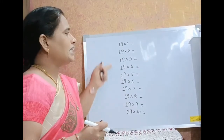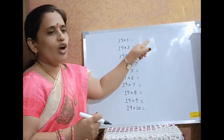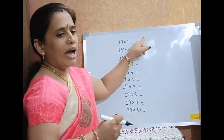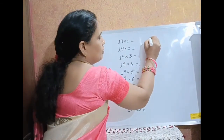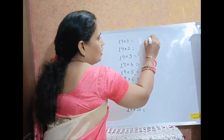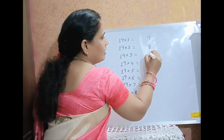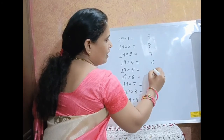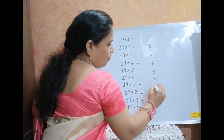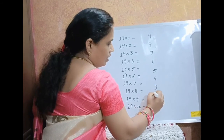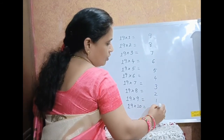For the table of 19, for the unit digit, you have to write the backward counting from 9 to 0: 9, 8, 7, 6, 5, 4, 3, 2, 1, 0.